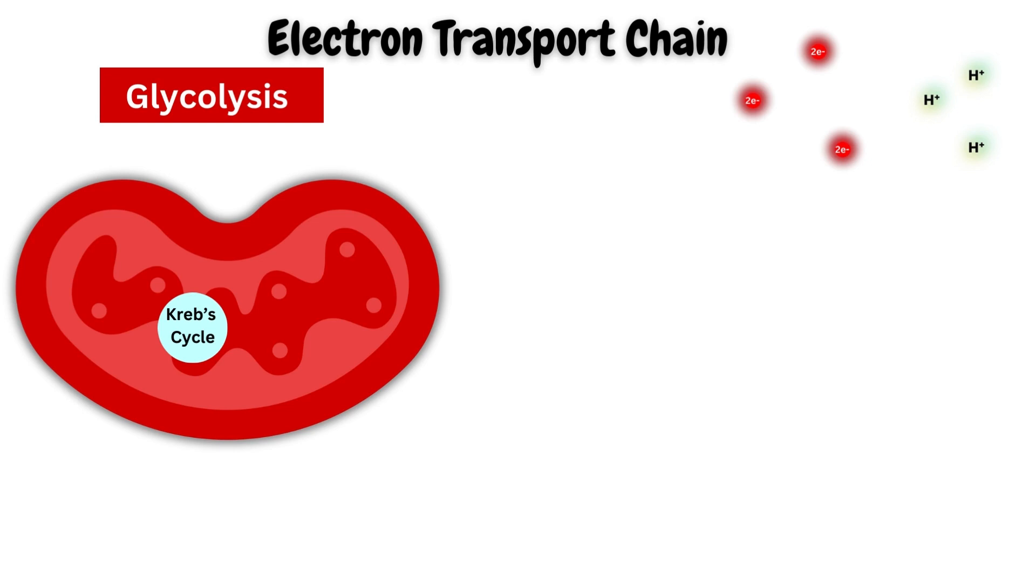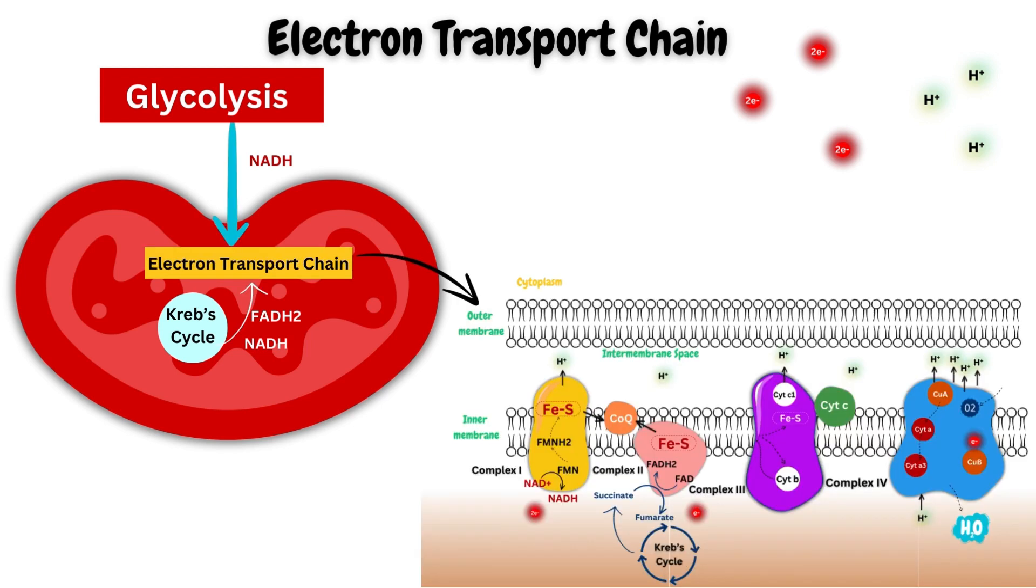In electron transport chain, electrons are utilized to generate proton gradient. You will be wondering from where these electrons come from. The glycolysis process and the Krebs cycle produce nicotinamide adenine dinucleotide and flavin adenine dinucleotide which carry high energy electrons. These electrons are used in electron transport chain that occur in the inner mitochondrial membrane.